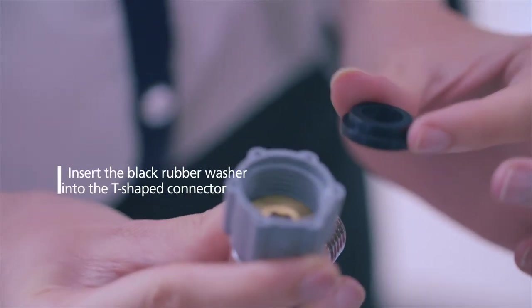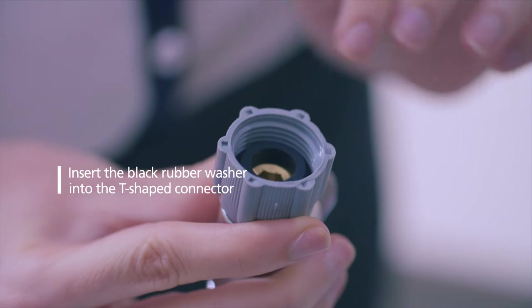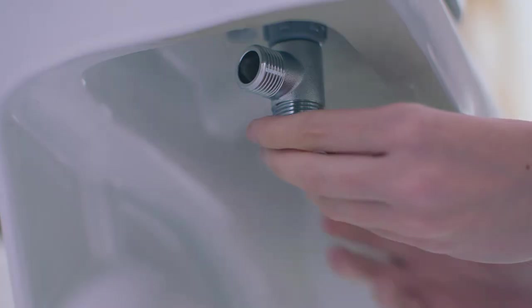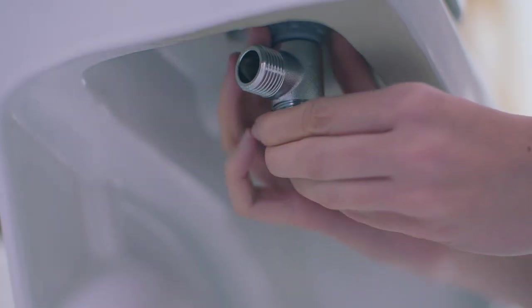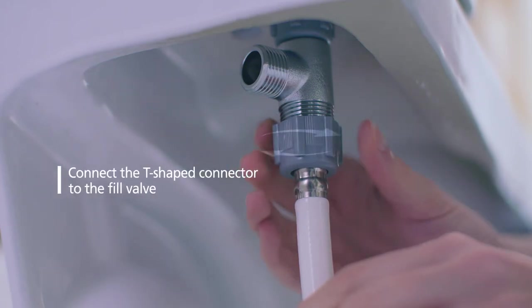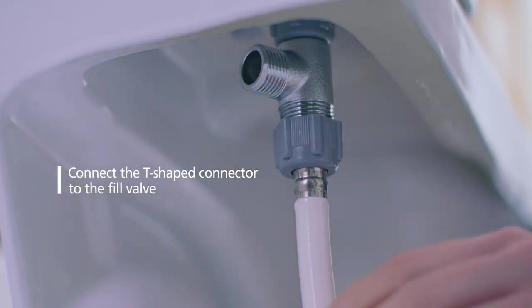Insert the black rubber washer into the T-shaped connector, making sure the flat side of the washer is against the connector and the washer lip is face up. Connect the T-shaped connector to the fill valve under toilet tank.